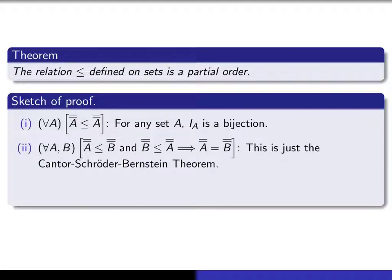The anti-symmetric property that's required is just the one that we wrote down. It's just a fancy way of writing the Cantor-Schröder-Bernstein theorem.